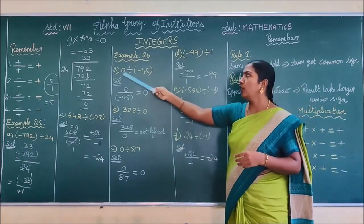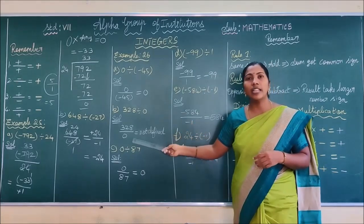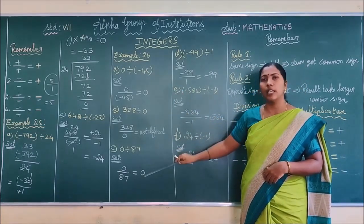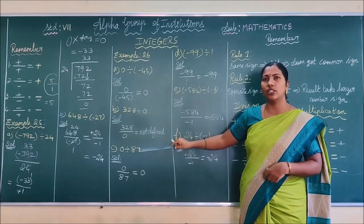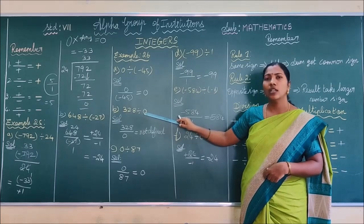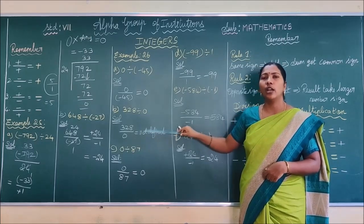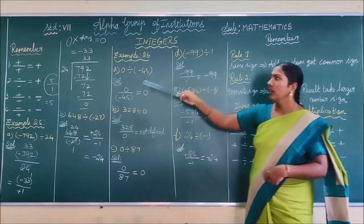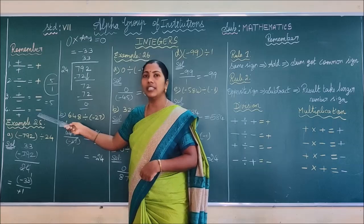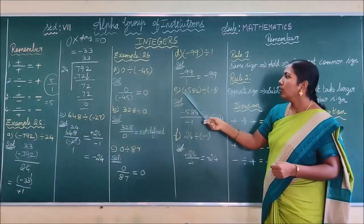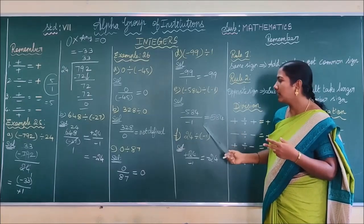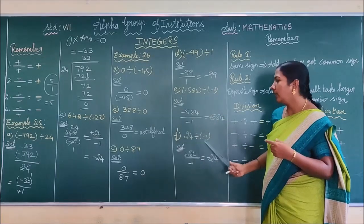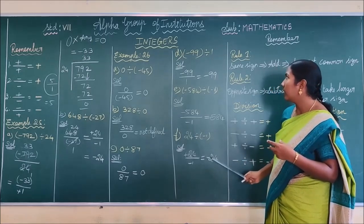Let us summarize: here if the numerator is 0, the answer is 0. Here if the denominator is 0, it is not defined. A and C are the same case: whether the integer is negative or positive, 0 divided by any number is 0. Whenever the denominator is 0, you write not defined. If the denominator is positive and numerator is negative, the answer is negative. If numerator and denominator are both negative, the answer is positive by the division rule. If numerator is positive and denominator is negative, plus by minus is minus.